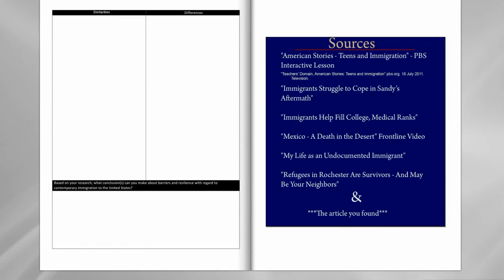It's going to be very easy because you have all of these in your barriers folder, or you can access two of them online: the American Stories, Teens and Immigration, PBS Interactive Lesson. You've printed up a hard copy, but you also have access to that online — remember to log in using your wiki username and password. You have a record of all the videos and all the text included in that site. The other one that's online is Mexico: A Death in the Desert, which was the Frontline video we watched in class.